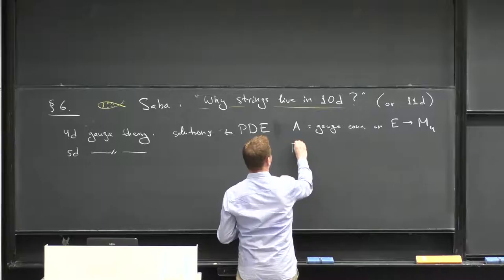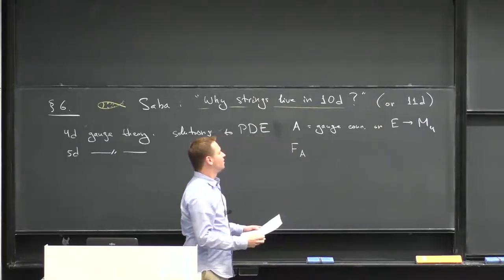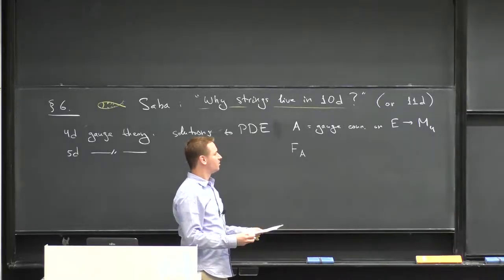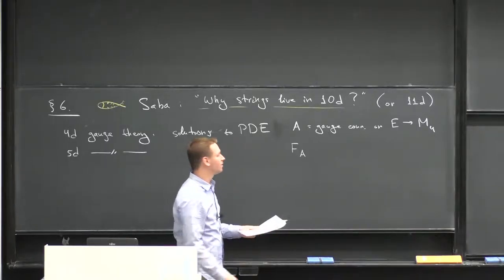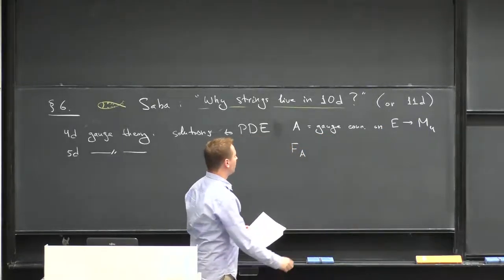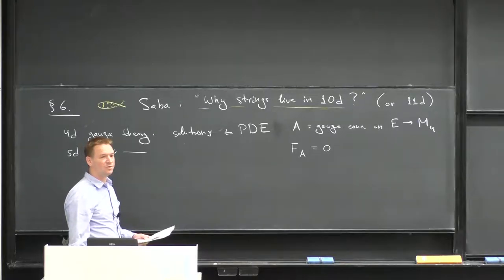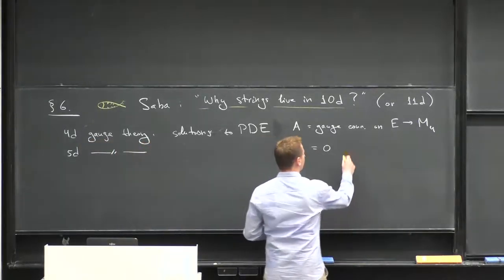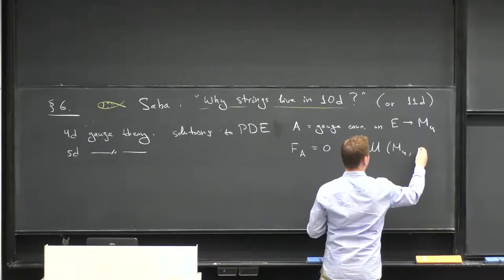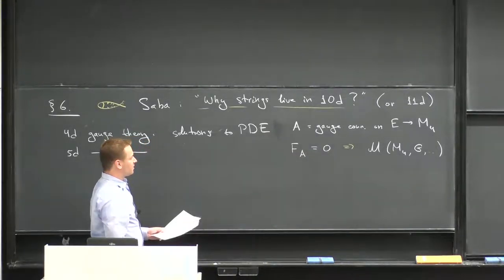Typical PDEs involve various constraints on curvature of this gauge connection. Since you want equations modulo gauge transformations, you have to look at quantities which transform nicely with respect to gauge transformations. The connection itself does not have this property, but the curvature F, the two-form, does. One condition you can ask — one PDE — is to look at all possible solutions to F equals 0. That gives you some moduli space M, which depends on the choice of four-manifold, your group, and perhaps additional fixed data.